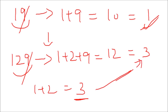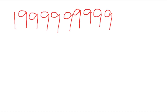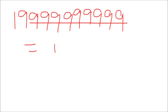So the simple shortcut trick is: just remove all the nines from the number. For example, given the number 1999999, you just remove all the nines and the digital sum is simply 1. As simple as that.